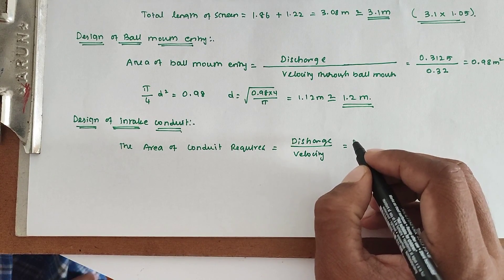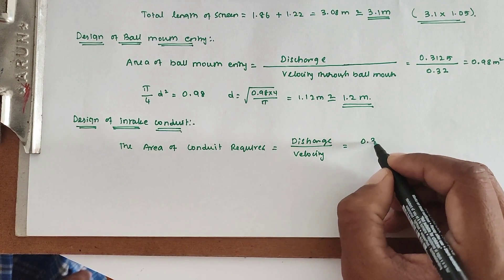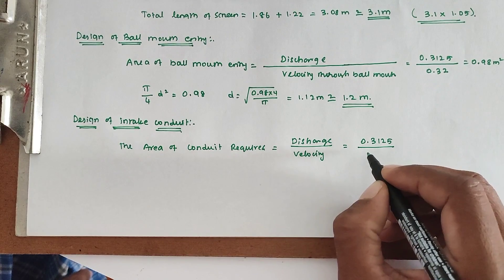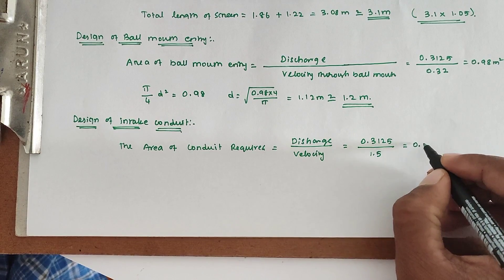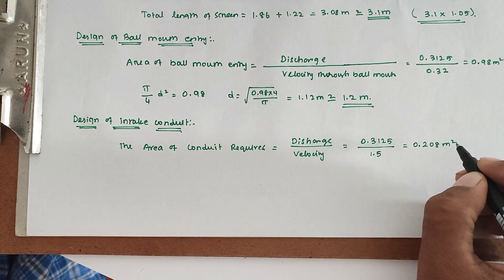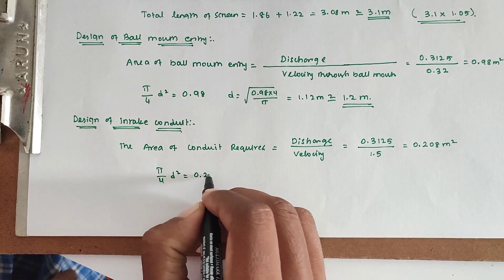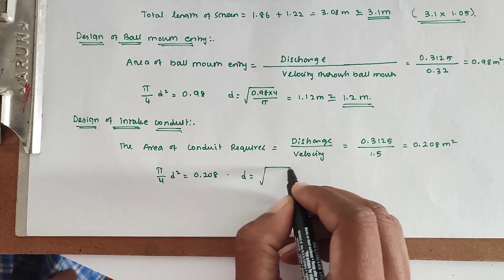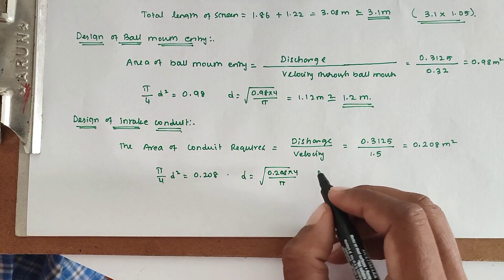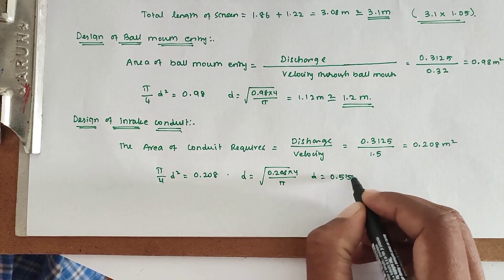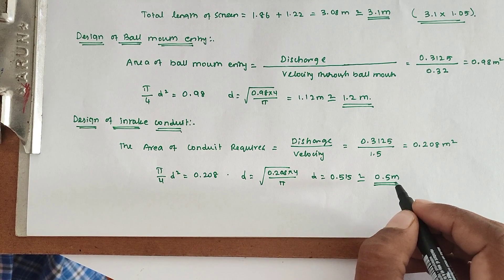Next, design of intake conduit. Area of conduit equals discharge divided by velocity; assuming velocity of 1.5 m/s: 0.3125 / 1.5 = 0.208 m². Using π/4 × d² = 0.208, d equals √(0.208 × 4 / π), giving 0.515 m, taken as 0.5 m. This is the diameter of the intake conduit.